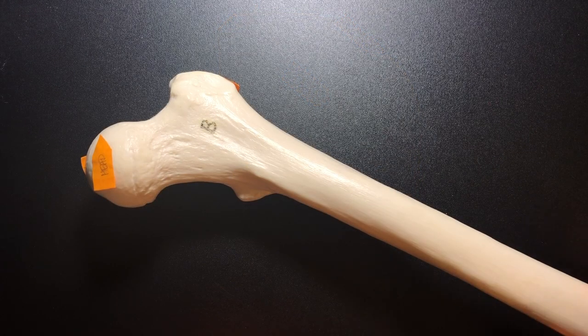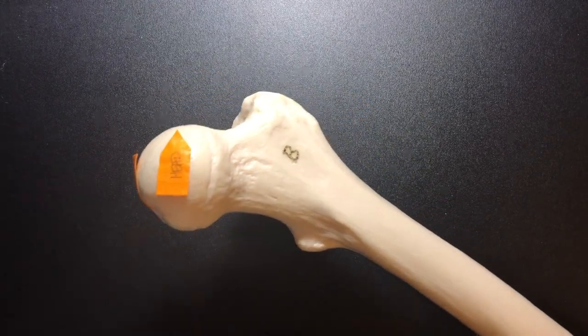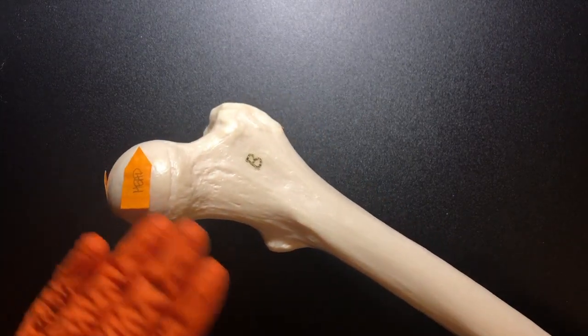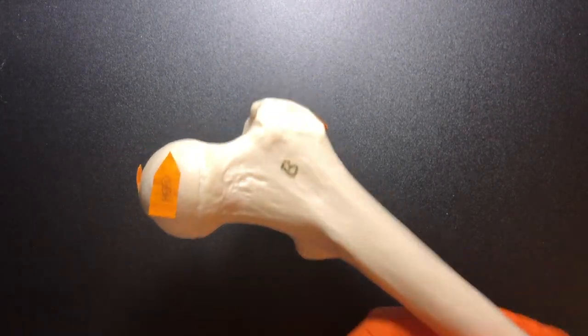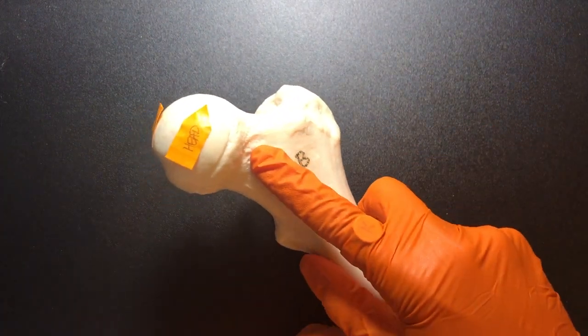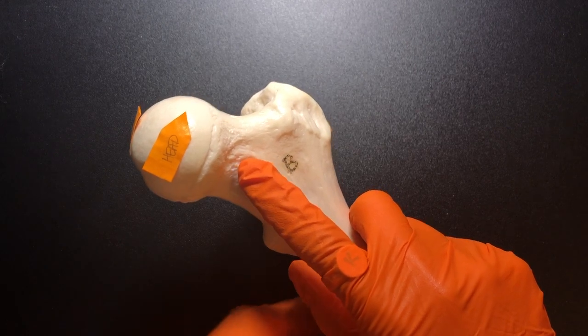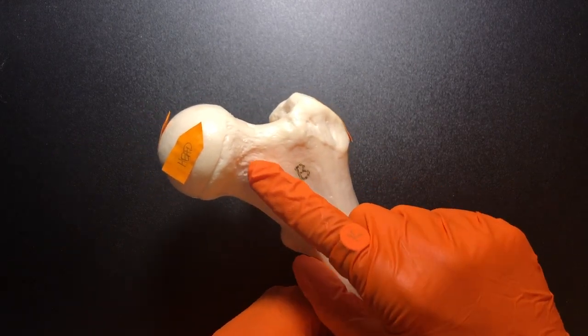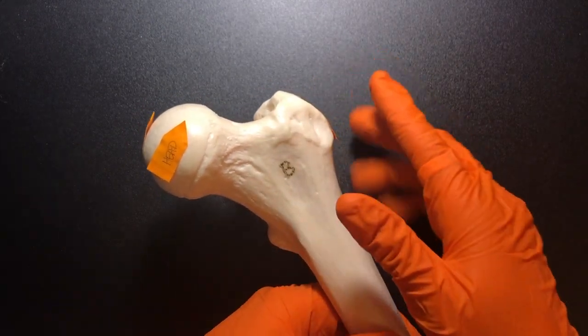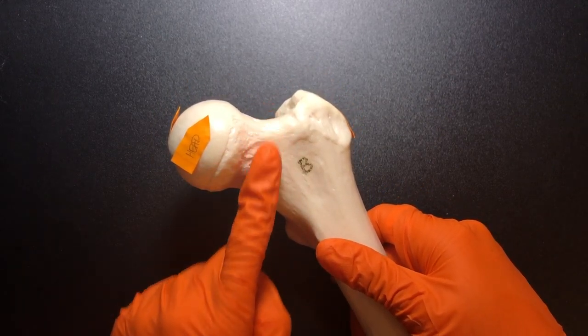This is the femur. And here we have the head. Again, remember the head is always going to be the proximal end, which makes this part the neck. And just like we saw in the humerus, this is again called the surgical neck. And so if you've ever heard of someone breaking their hip, more than likely it was a femoral neck fracture.